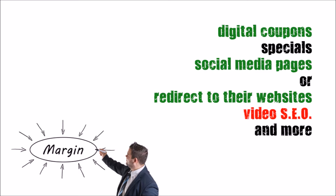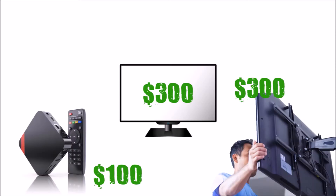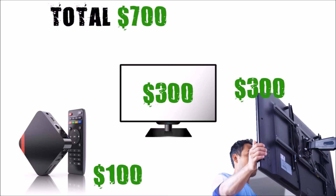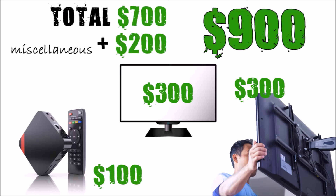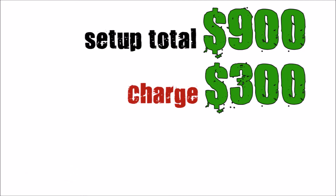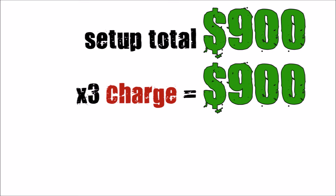Digital signage solutions have extremely high profit margins relative to their investment if done correctly. You can start an ad screen ready for advertising with a TV costing $300, a $100 media player including software, and another $300 for a bracket and TV installer, totaling $700. Even if it costs you $900 to deploy an ad screen and you charge just $300 yearly, three ads would give you your entire investment back.